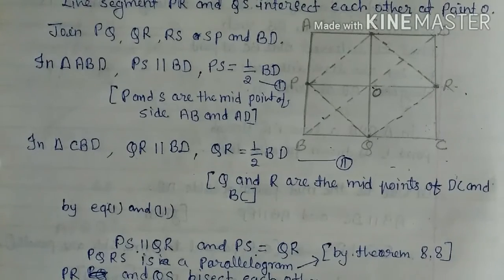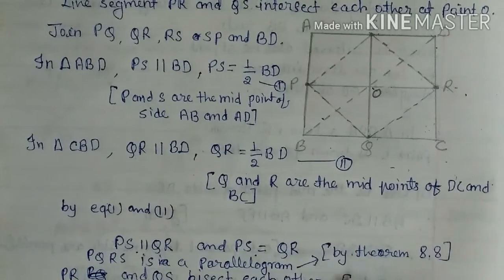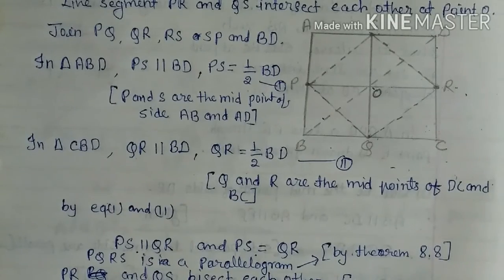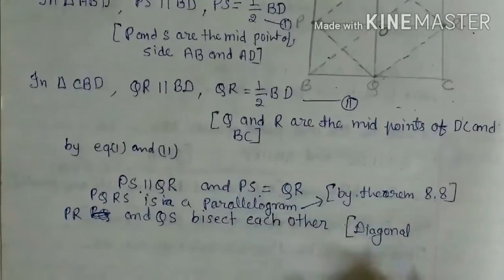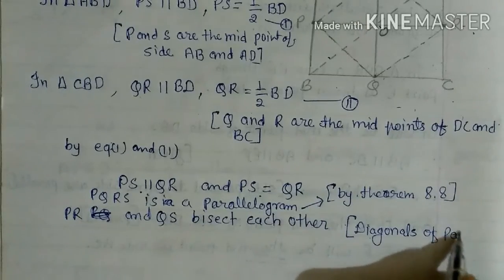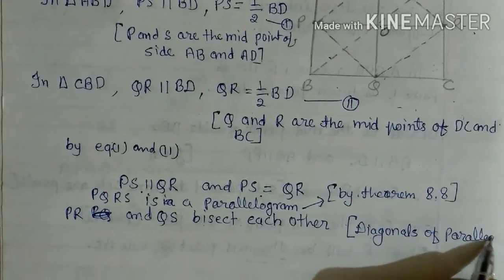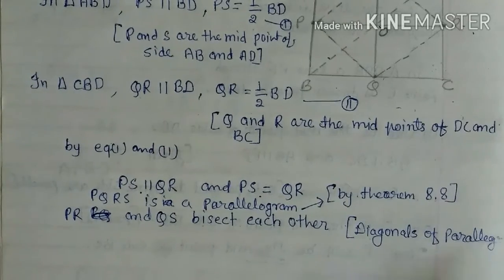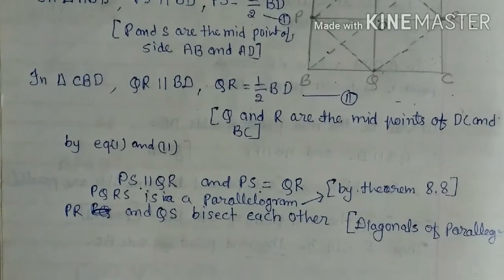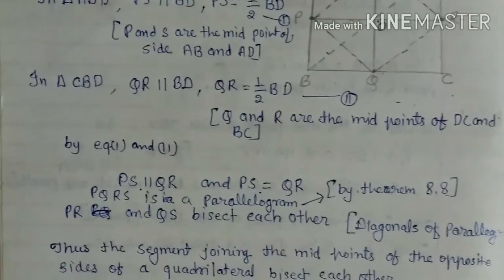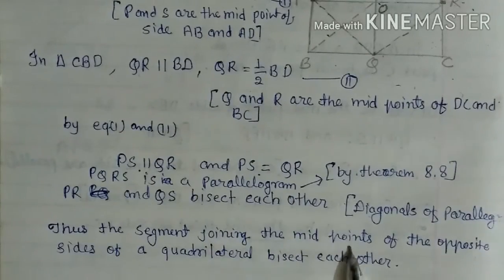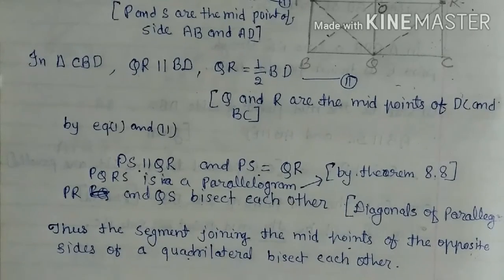Diagonals of a parallelogram bisect each other. Therefore, the line segments joining the midpoints of the opposite sides of a quadrilateral bisect each other. Okay, now complete the exercise.